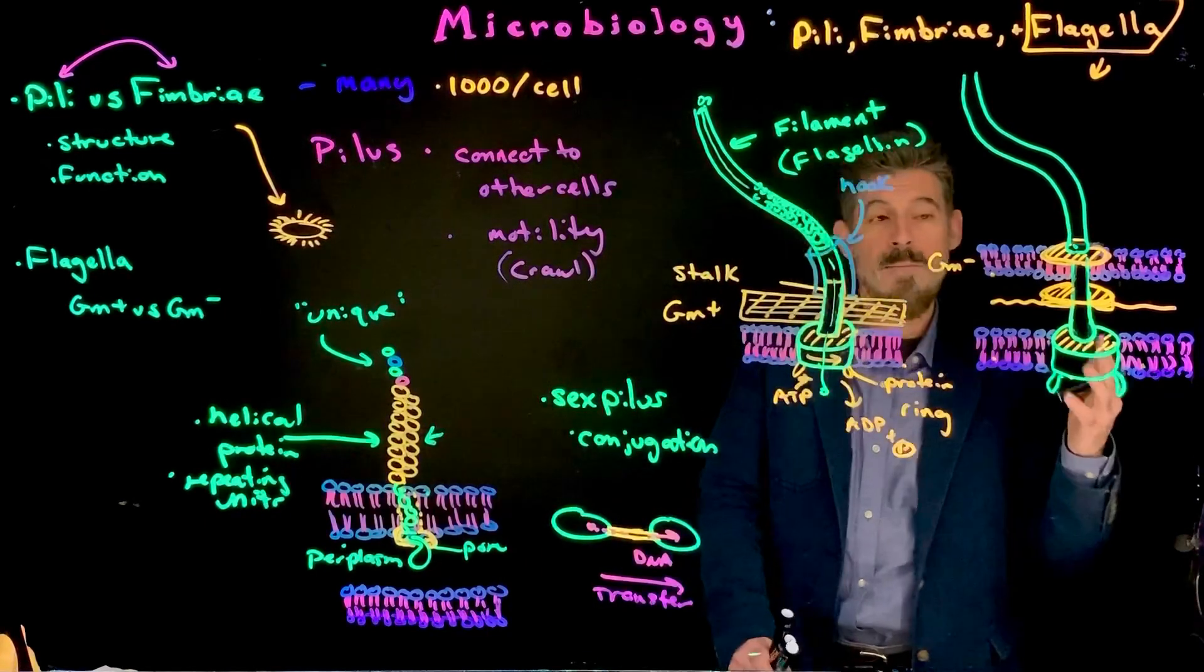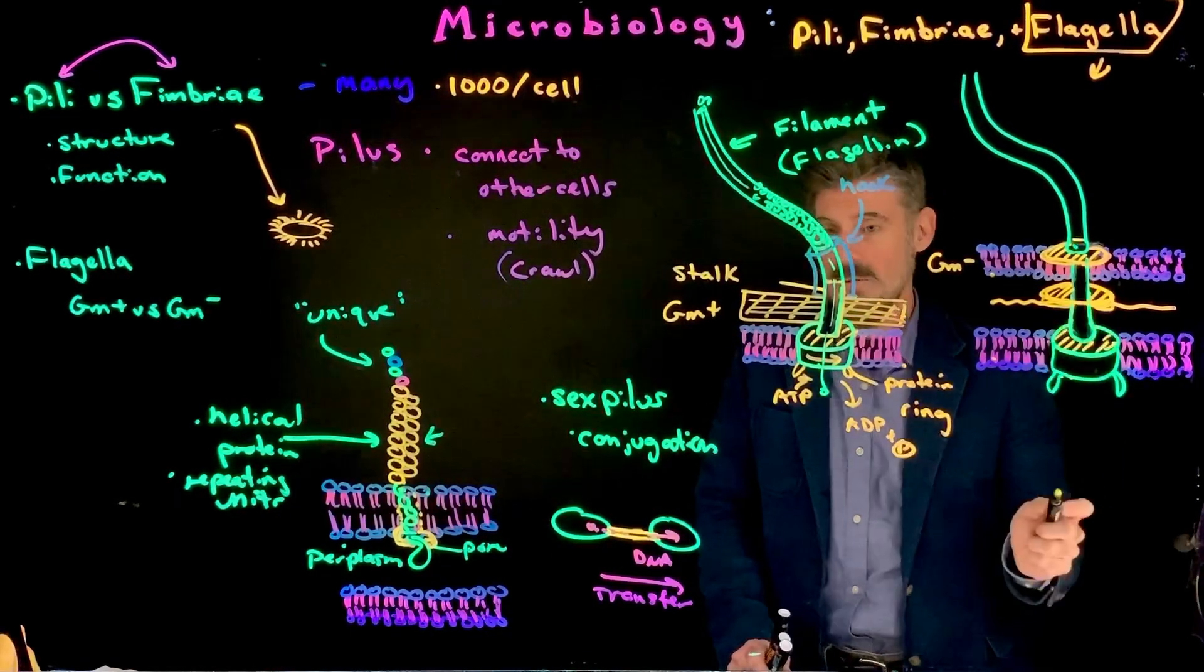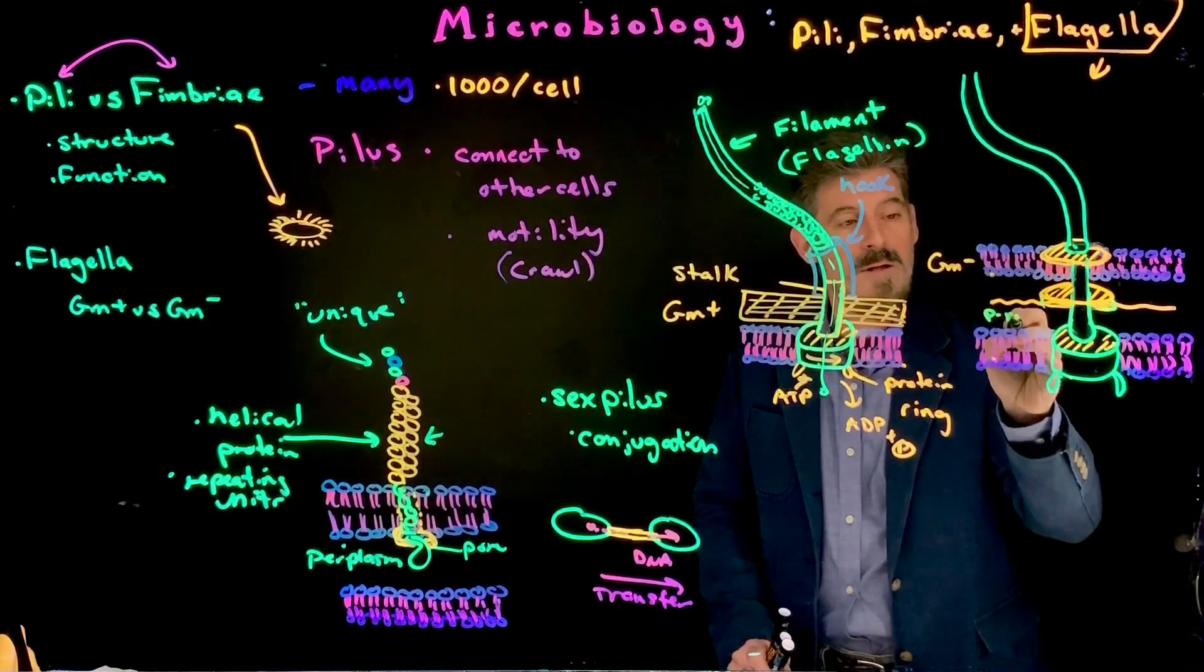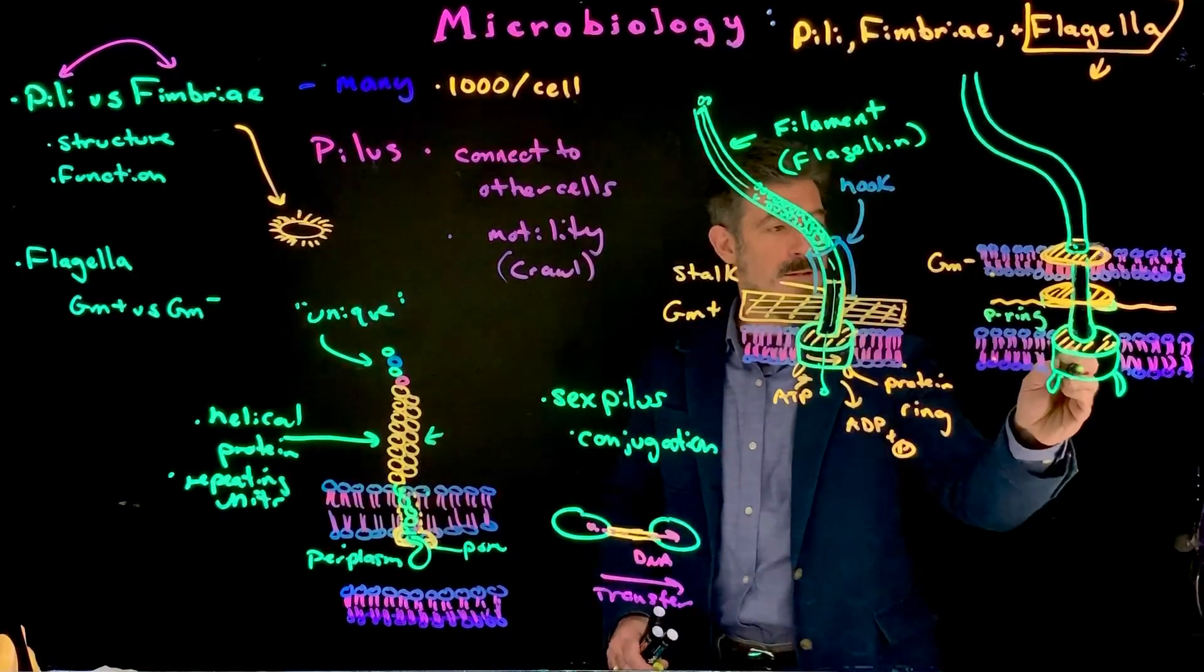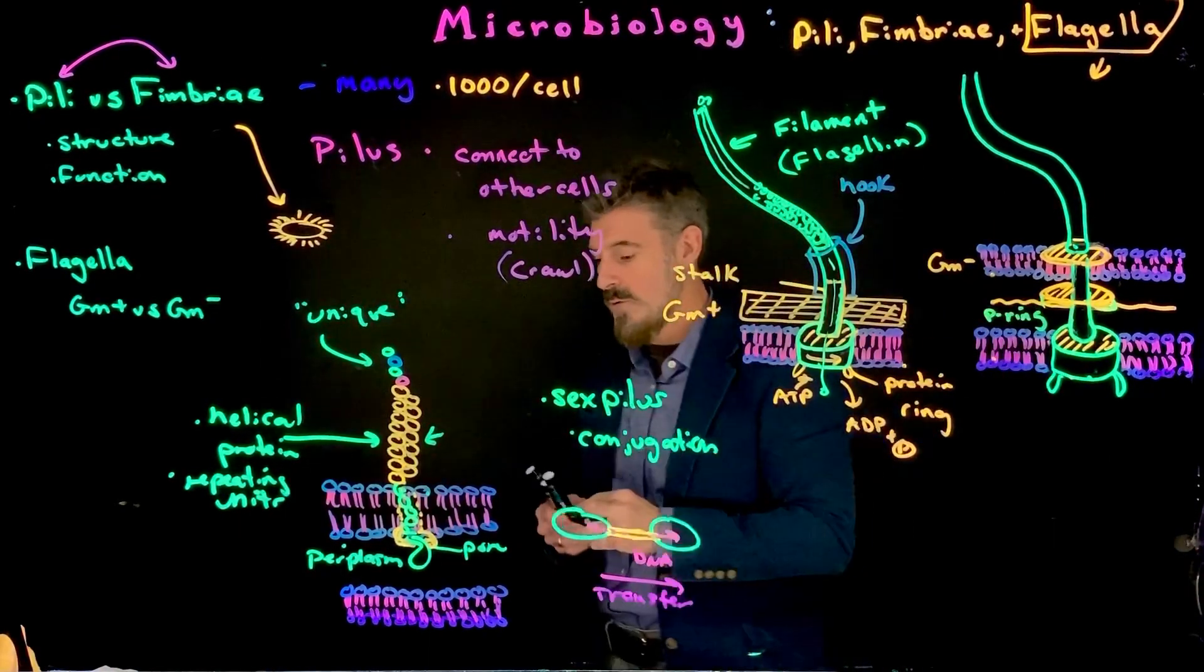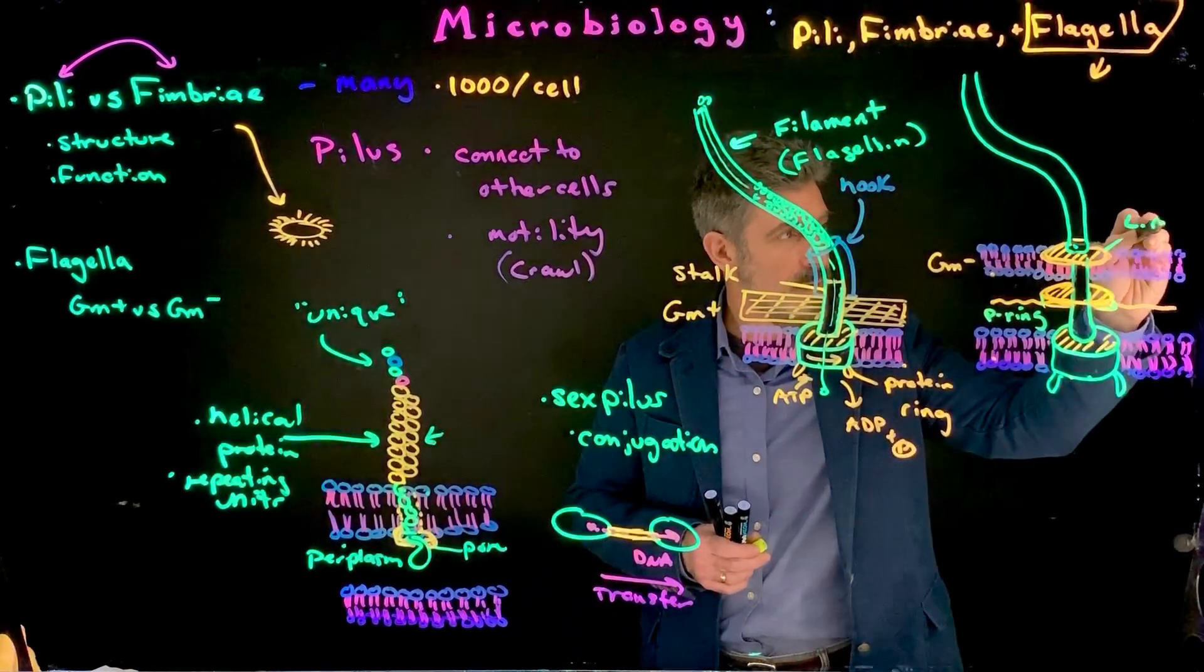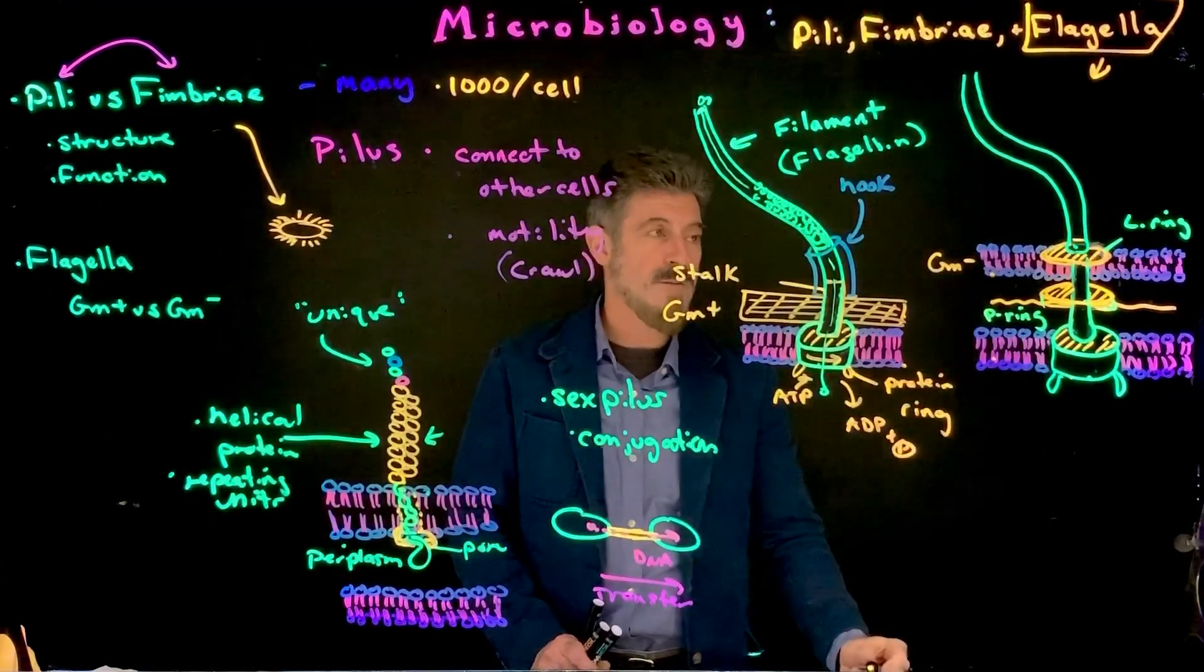Now, in gram-negative bacteria, we have a lot more structure. So, we actually have additional rings. So, we have a ring associated with the peptidoglycan, something called a P-ring. That's this one right here. And so, that's in addition to the other ring. And then there's an outer one called the L-ring that is attached to the outer phospholipid bilayer.